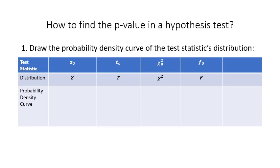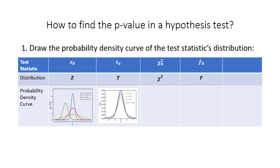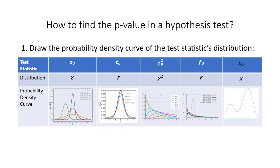If your test statistic is labeled f sub 0, then the f distribution is used. For a z distribution, sketch the standard normal probability density curve with mean 0 and standard deviation 1. For a t distribution, use the degrees of freedom to sketch the t curve. For the chi-square curve, you also need the degrees of freedom — it is a right-skewed curve, as is the f curve. To sketch the f curve, you need two degrees of freedom: the degrees of freedom in the numerator (dfn) and in the denominator (dfd). In this video, I will use a generic distribution x with generic test statistic lowercase x sub 0 and a generic probability density curve.